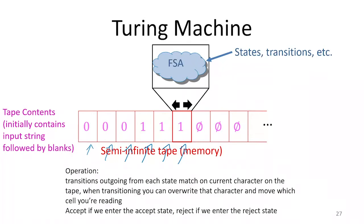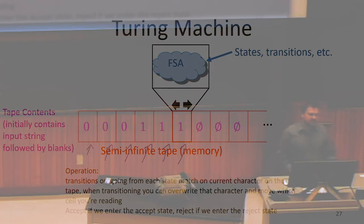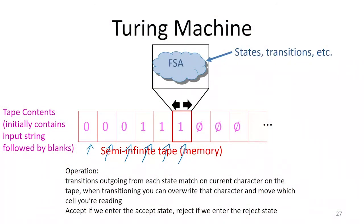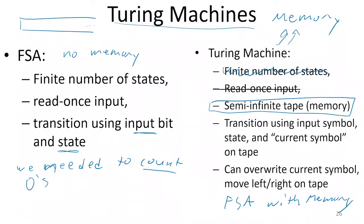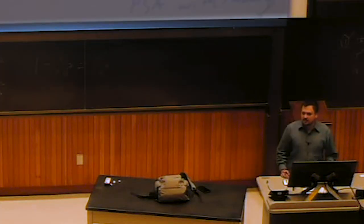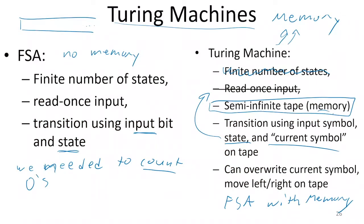Our memory is a one-dimensional structure we call a tape, with a bunch of locations where we can store bits. For a finite state automaton, we transition using just the input bit and the state. For a Turing machine, we're going to be able to transition using the state and our current symbol on the tape — what we're currently looking at in memory. This allows us to re-read things: because we're writing things down, we can go back and look at them later. A Turing machine is a finite state automaton with memory we can read from and write to, and we transition to different states depending on what's in that memory.